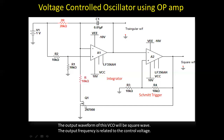The output waveform of this VCO will be a square wave, and the output frequency is related to the control voltage. We need to see the operation: how changing V1 changes the frequency of the output square wave, and also changes the triangular wave. Let's go through the operation.